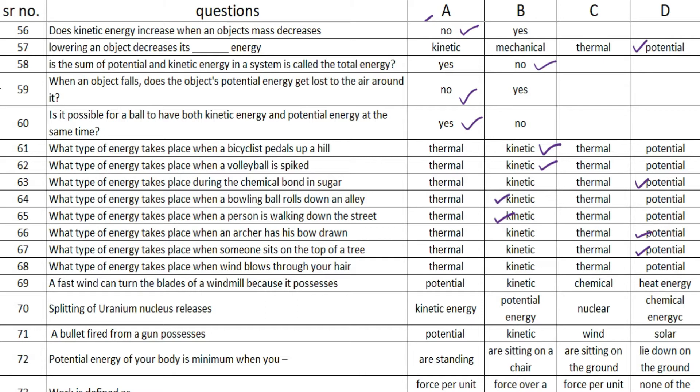What type of energy takes place when wind blows through your hair? The answer is option B — kinetic. The next one is: a fast wind can turn the blades of a windmill because it possesses option A — potential.